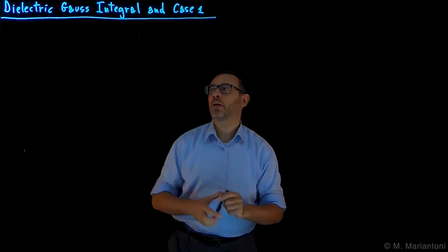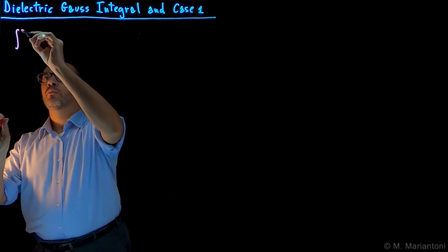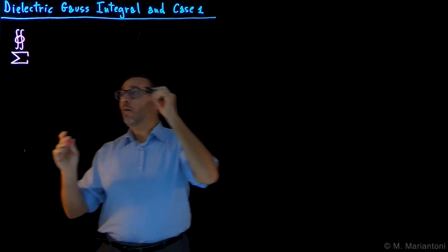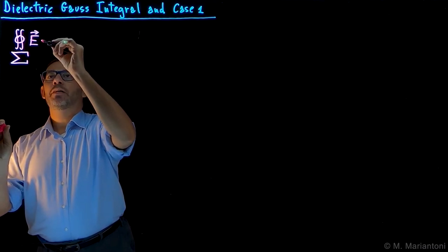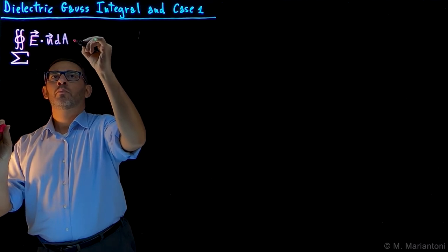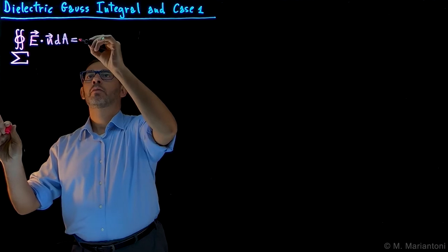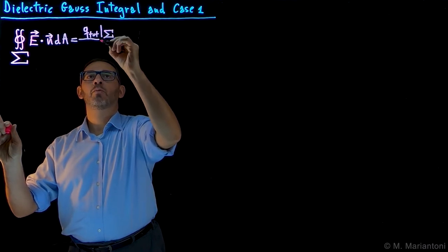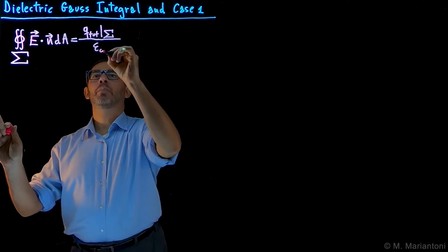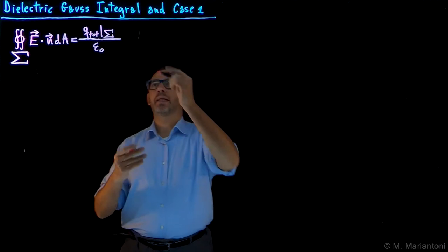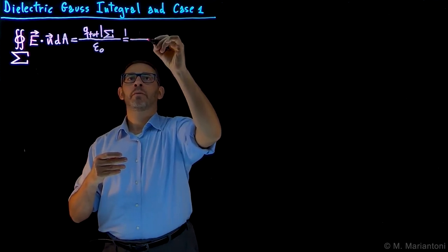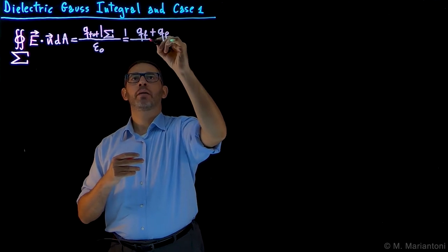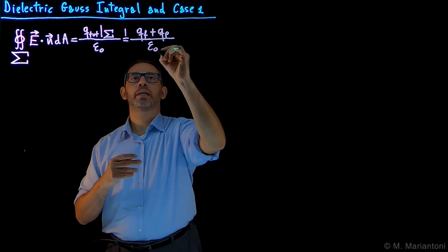Therefore Gauss's theorem will read: the flux through a closed surface Σ, which encloses a region Ω of three-dimensional Euclidean space, of E · n dA is equal to the total charge contained within Σ divided by ε₀. The total charge is nothing but the total free charge on all conductors plus the polarization charge Qp on the inside and surfaces of the dielectric materials, all divided by ε₀.